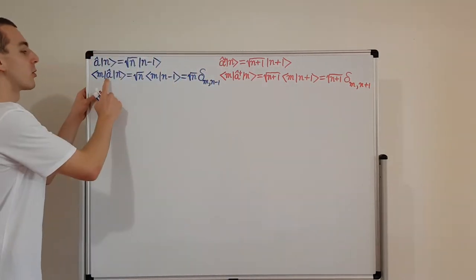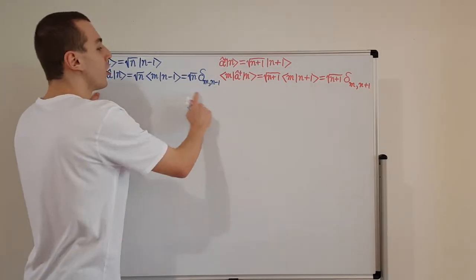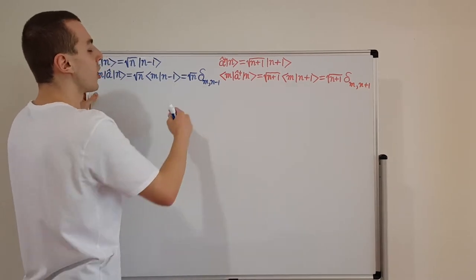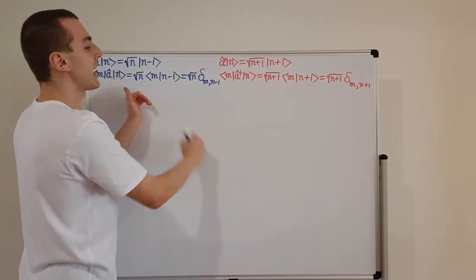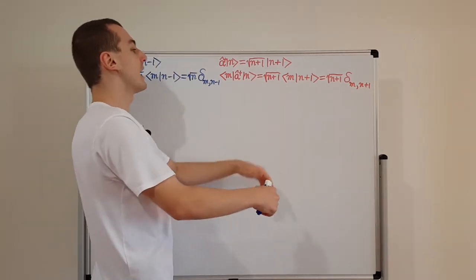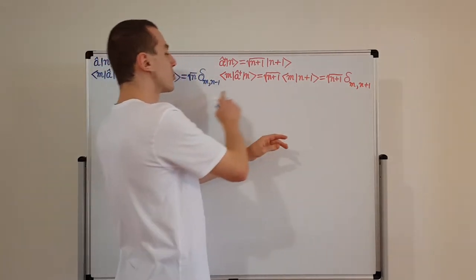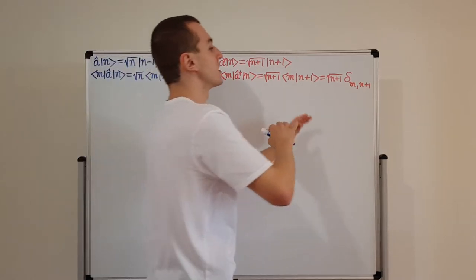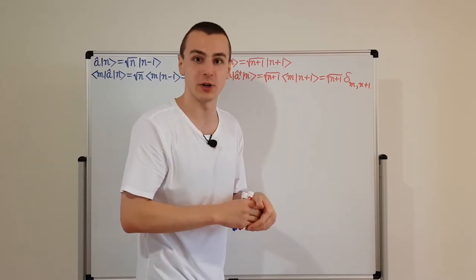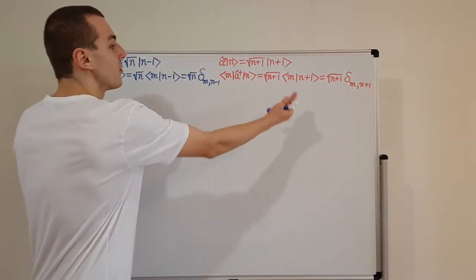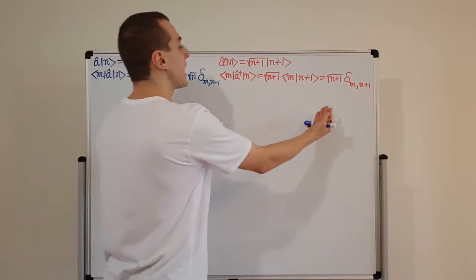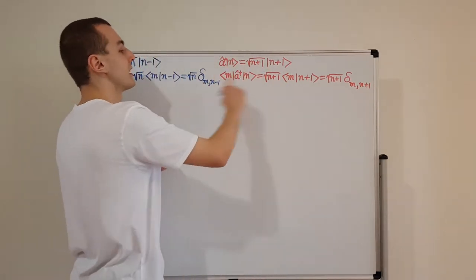The matrix representation for A has all of these values — square root of 1, square root of 2, square root of 3 — just above the diagonal, and the diagonal is zeros. For A-dagger, we take the Hermitian conjugate, and since all of these are real values, the transpose is all we need. Taking the complex conjugate doesn't change the elements, so A-dagger is just a flipped version of A — taking the transpose takes you back and forward between the two.